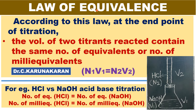This is the mathematical form of the law of equivalence: N1V1 = N2V2. The volumes contain the same number of equivalents. For example, in an acid-base titration with HCl versus sodium hydroxide, the number of equivalents of HCl is equal to the number of equivalents of sodium hydroxide — for instance, 0.5 equivalents of HCl will react with 0.5 equivalents of sodium hydroxide.